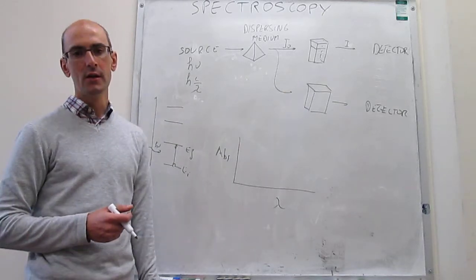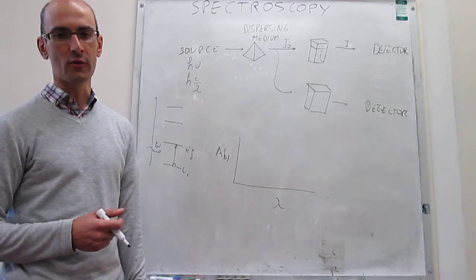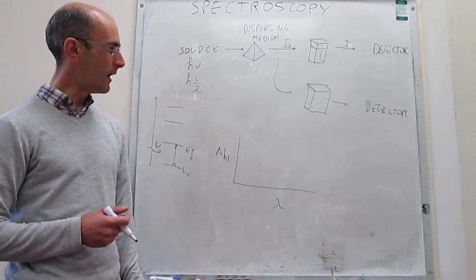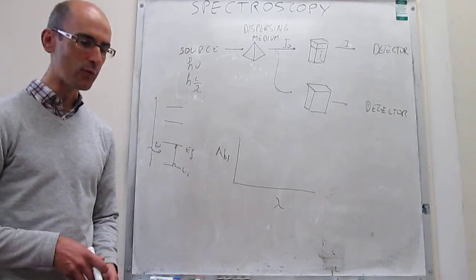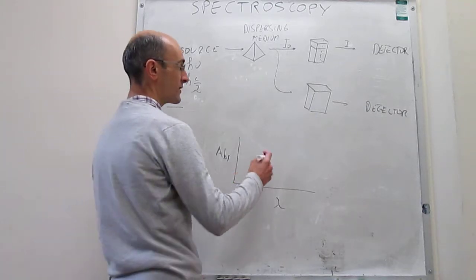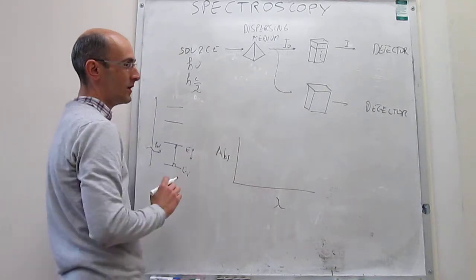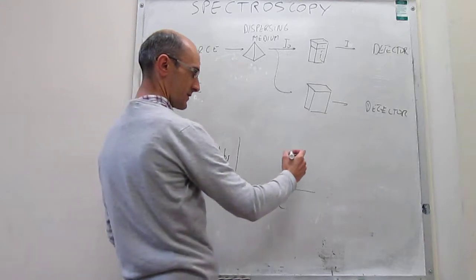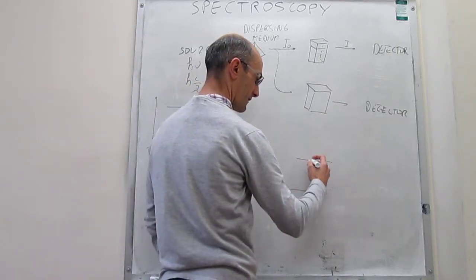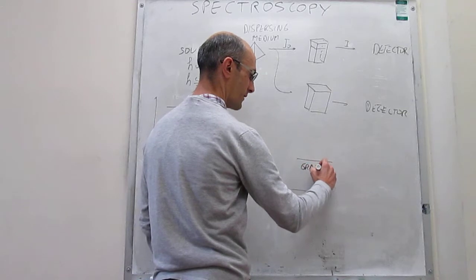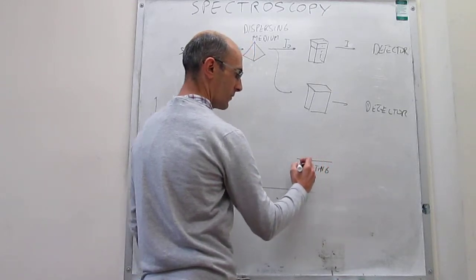In more modern times, we use something called a diffraction grating to select different wavelengths. And the way that diffraction gratings mounted on the spectrometers work is as follows. This is the grating, and this grating has grooves.